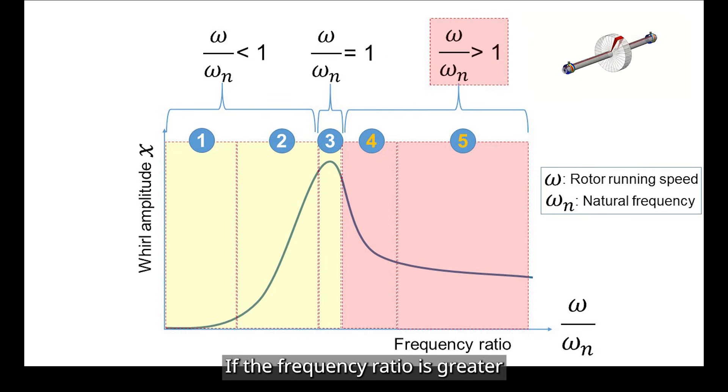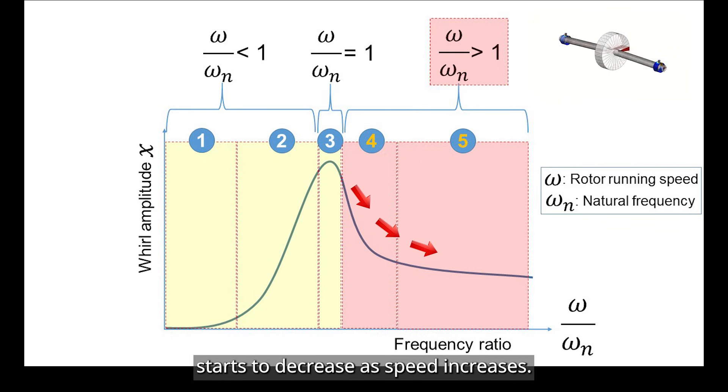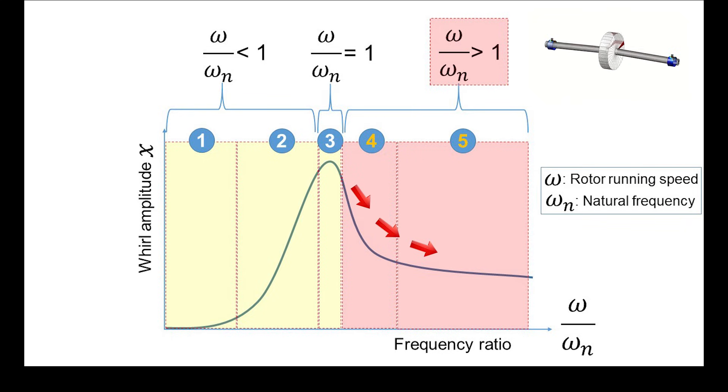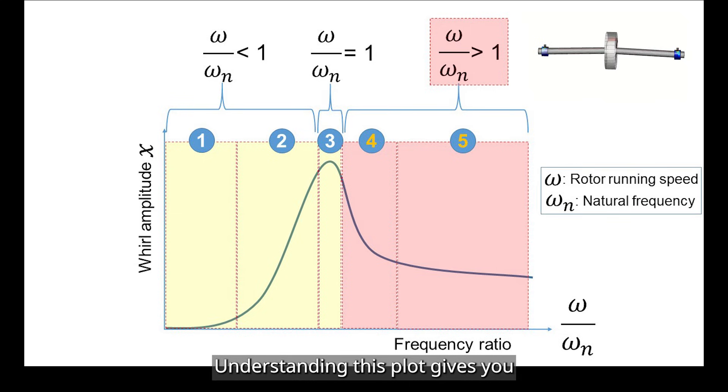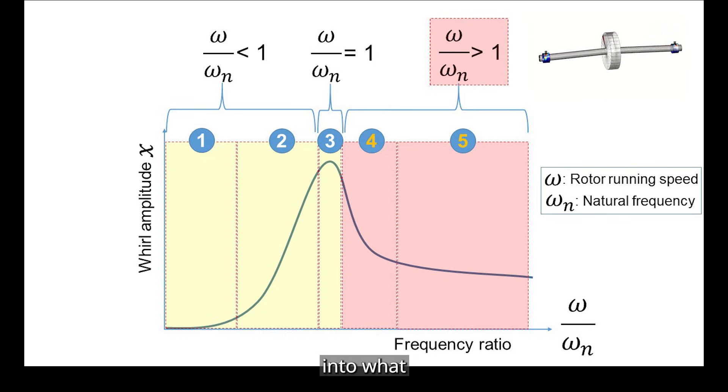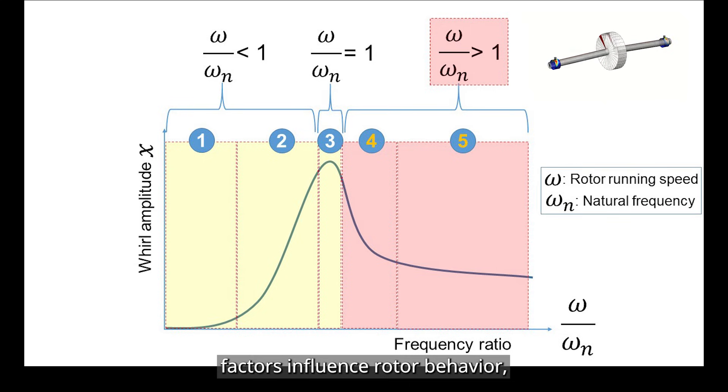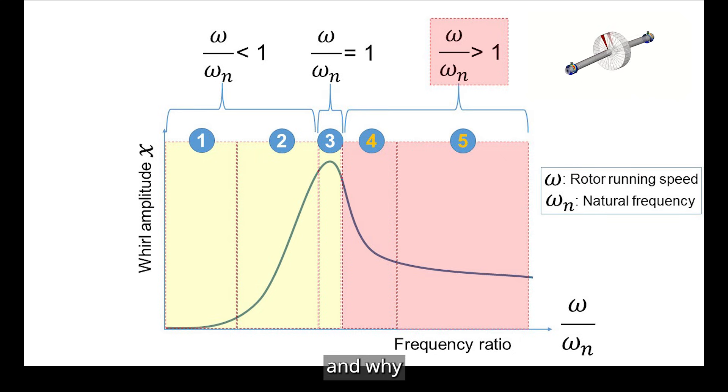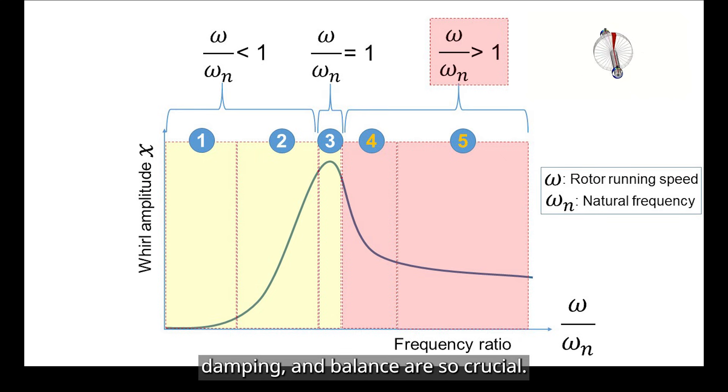If the frequency ratio is greater than 1, the rotor is running faster than the natural frequency, and the response starts to decrease as speed increases. Understanding this plot gives you deep insight into what factors influence rotor behavior and why design decisions like stiffness, damping, and balance are so crucial.